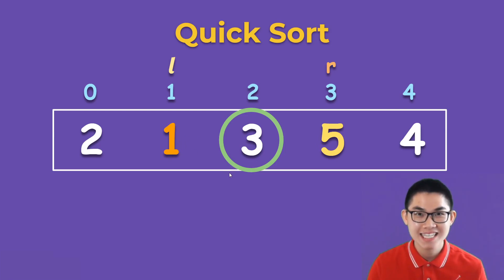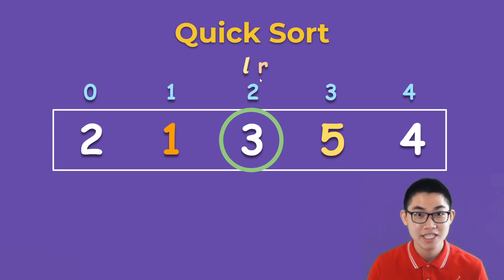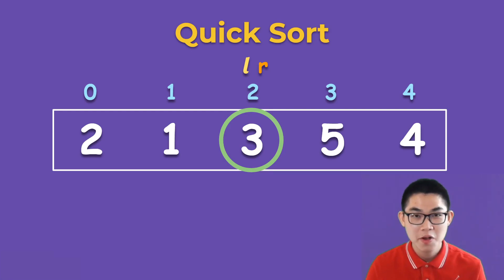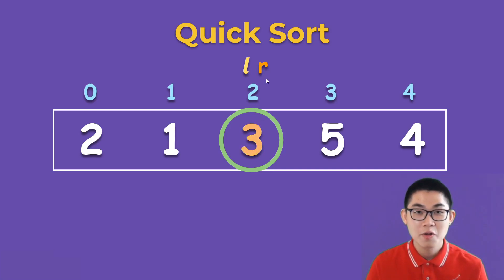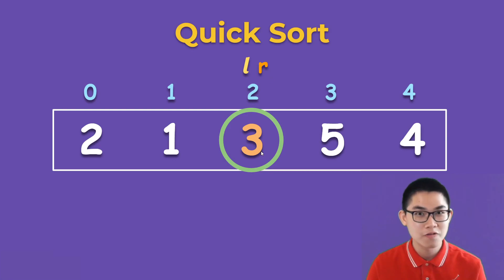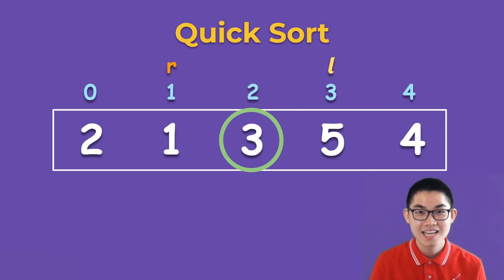Now 1 is in the left bubble and 5 is in the right bubble. Then we move L to the right and R to the left and repeat this process. L will try to find a number larger than or equal to the pivot — L already found 3, which is equal to the pivot. R will find a number smaller than or equal to the pivot — R also finds 3. We swap 3 with itself, then move L to the right and R to the left. At this point, L and R have crossed each other, which indicates that the partition game is finished.